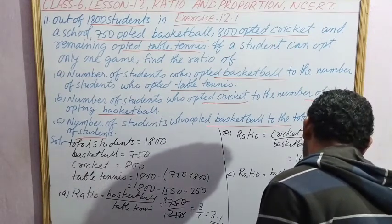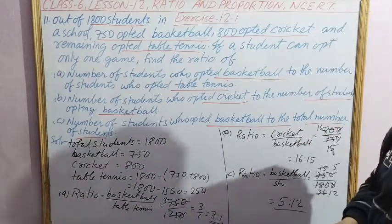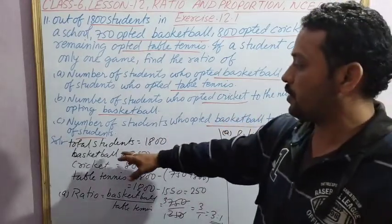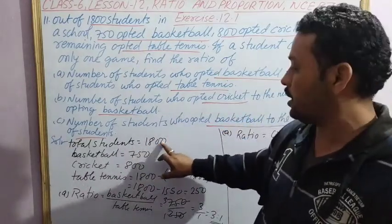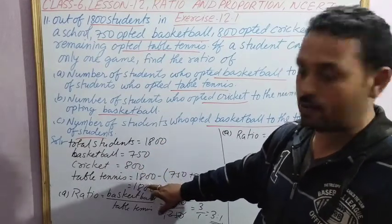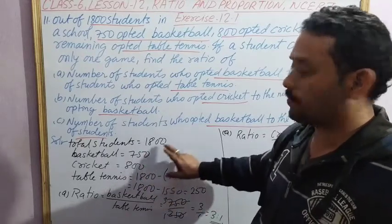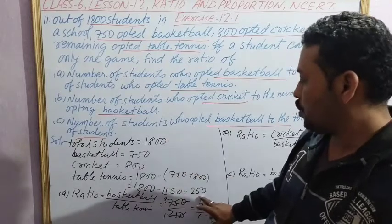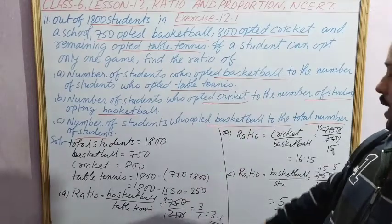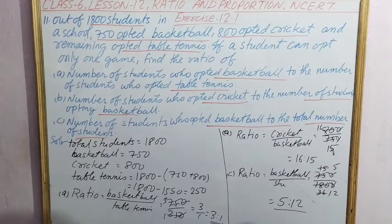So ratio will be 5 is to 12. In this question, total students is 1800, basketball 750, cricket 800. Table tennis we find by subtracting basketball and cricket from total students, giving 250. Then first ratio is 3 is to 1, second is 16 is to 15, and third is 5 is to 12.